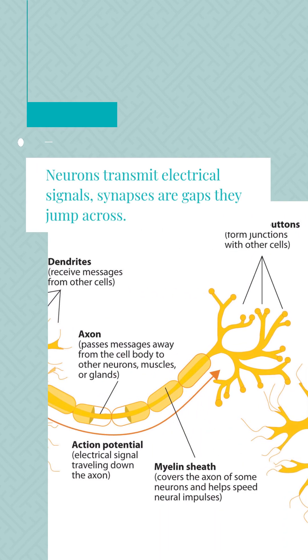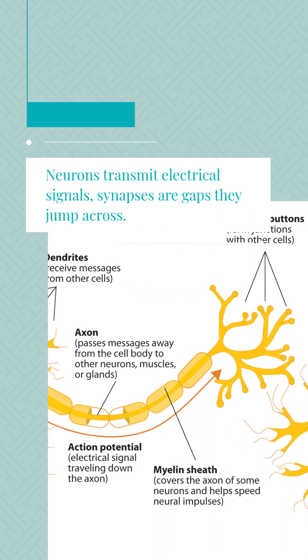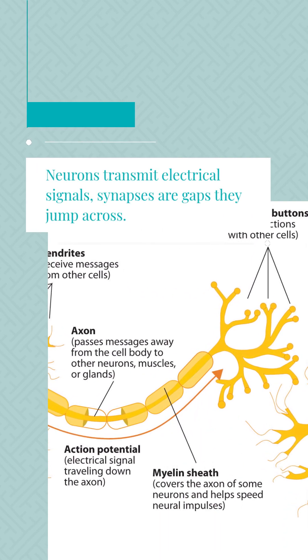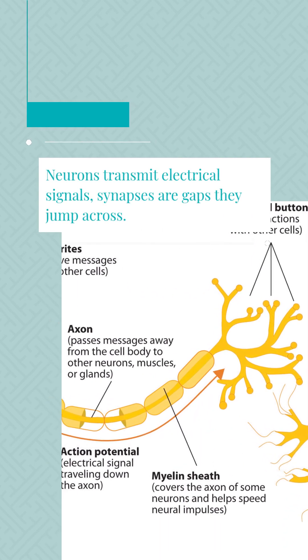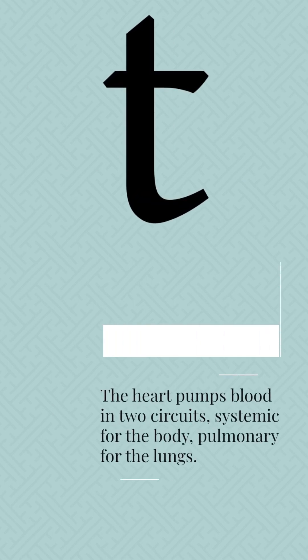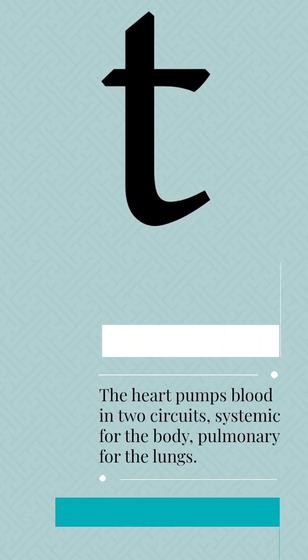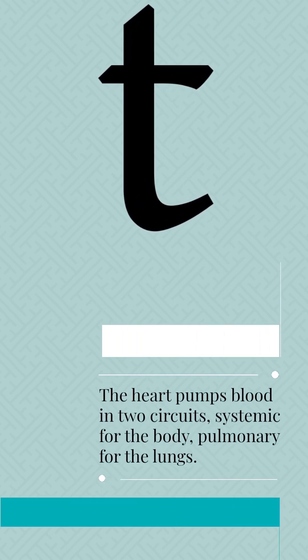Neurons transmit electrical signals across synapses, the gaps they jump across. The heart pumps blood in two circuits: systemic for the body, and pulmonary for the lungs.